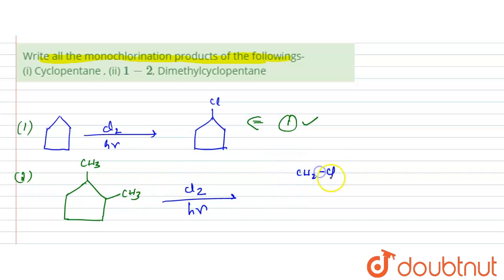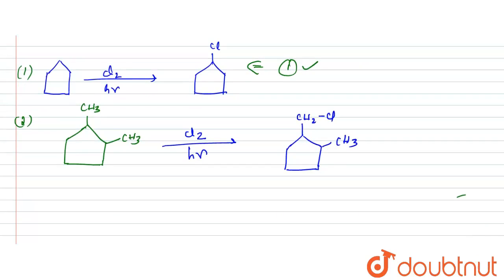This CH2Cl can be there. And you will have CH3 here. Another product is that if this hydrogen is replaced, this is the primary hydrogen. Now if this tertiary hydrogen is replaced, then you can get another product. So what will be that product? If the tertiary hydrogen is replaced, then the product will be like this: chlorine, here you have CH3 and here you have CH3.